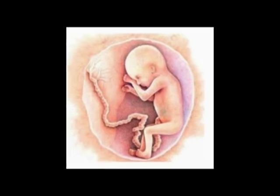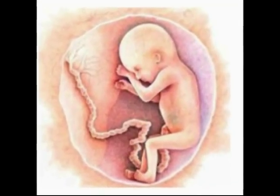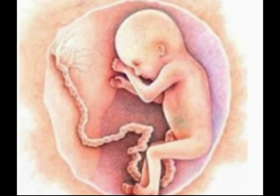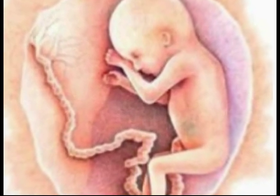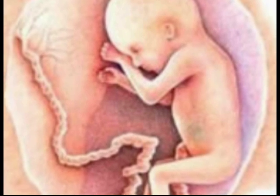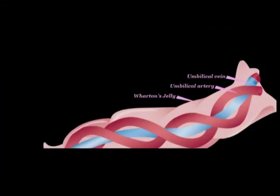Il cordone umbilicale prima e dopo la nascita e le sue principali complicanze. Il cordone umbilicale è il funicolo che congiunge l'embrione e la placenta materna e apporta ossigeno e nutrimento al feto, eliminando i suoi prodotti di rifiuto. Si costituisce dopo che tutti gli annessi embrionali si sono formati e hanno assunto i loro rapporti tipici e normalmente contiene due arterie e una vena umbilicali.